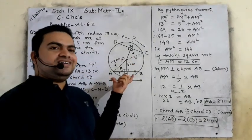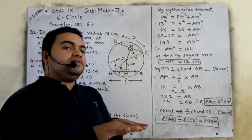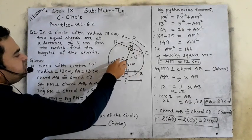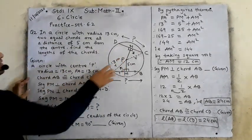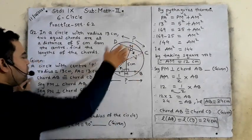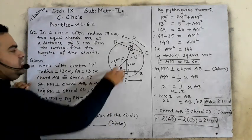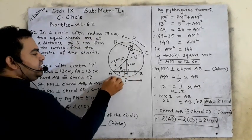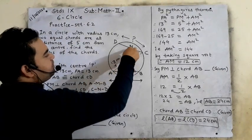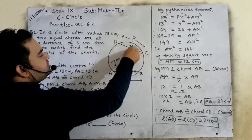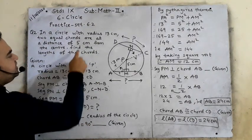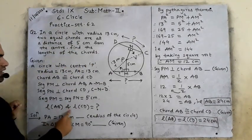Find the length of the chords. We have to find the length of chord AB and chord CD — and they will be equal. Given: circle with center P, radius PA or PC equals 13 cm, chord AB is congruent to chord CD. Segment PM perpendicular on chord AB, so A, M, B are collinear. Segment PN perpendicular on chord CD, so C, N, D are collinear. Find length of AB and CD.